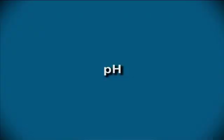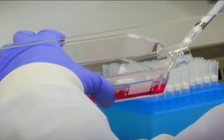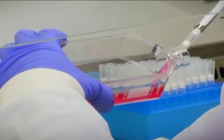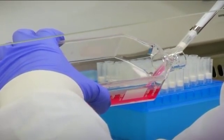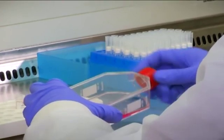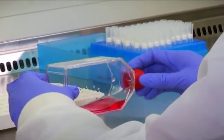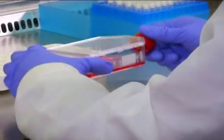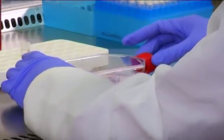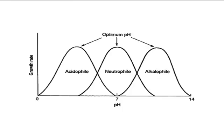Let us learn about the effect of pH on microorganisms. Microorganisms are strongly influenced by the pH of their surroundings. The pH range between minimum and maximum values is greater in fungi than in bacteria. Based on their tolerance and optimum growth, they can be acidophilic, neutrophilic, or alkaliphilic as shown in figure 8, which shows the types of microorganisms based on pH requirement for their growth.